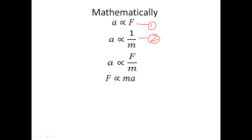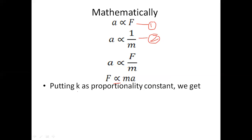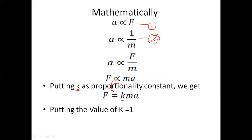Students, whenever you convert a proportionality sign into equality, you must introduce a constant of proportionality. Here the constant is k. The proportionality becomes equality and k is included. Taking k equal to one, we get F equals ma. This means when a force is applied on a body of mass m, it will accelerate in the direction of the force — this is Newton's second law, represented as F = ma.